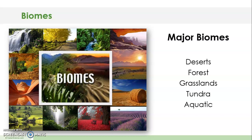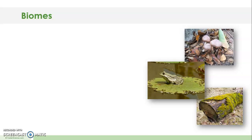We've spent the last couple of days taking really brief looks at several different types of biomes in our world. And so today we're actually going to take a look at another aspect of biomes. We're going to kind of shrink our view a little bit, or zoom in on a very unique and very tiny type of ecosystem that is found in all biomes, and that is called a micro habitat.